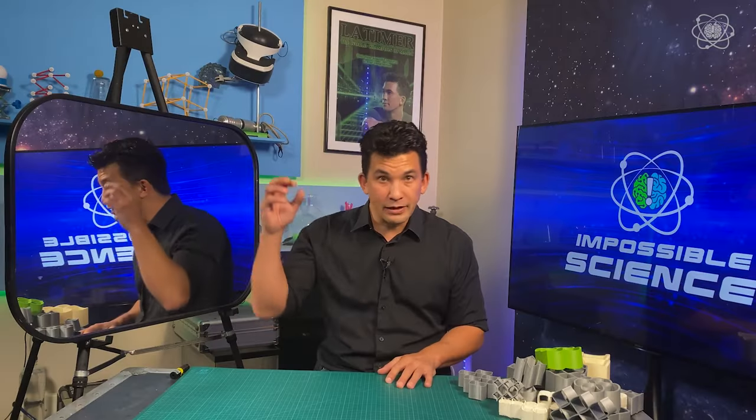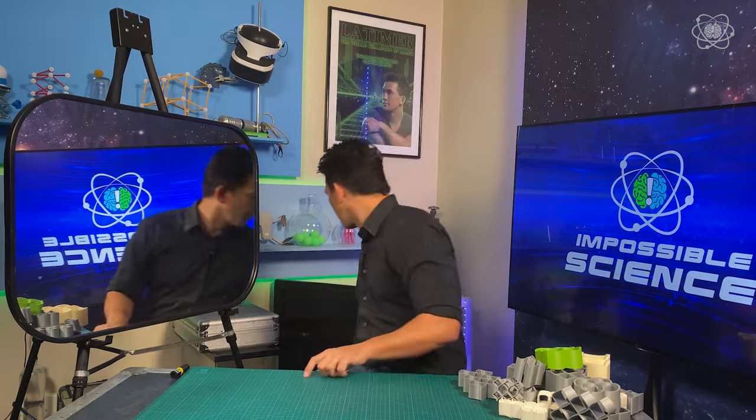Mirrors reflect front to back. To really understand this, you have to understand the law of reflection: the angle of light coming in is equal to the angle of light coming out. I'll show you with an experiment.